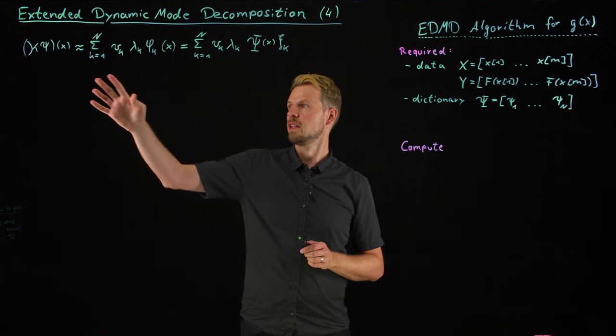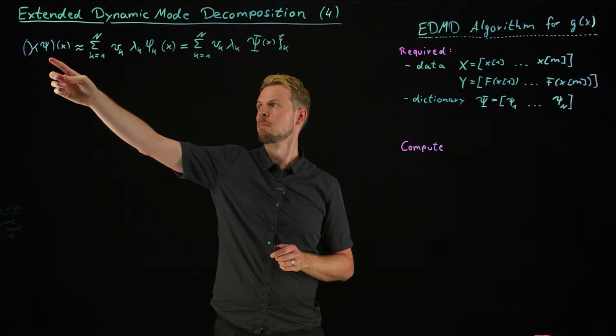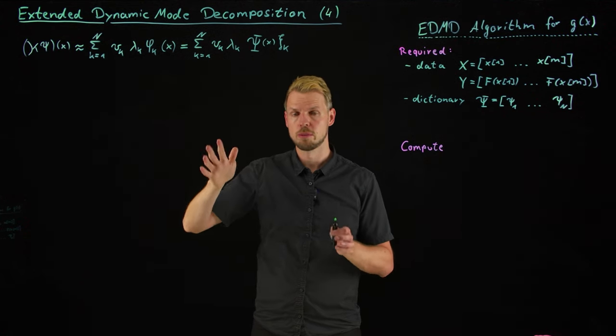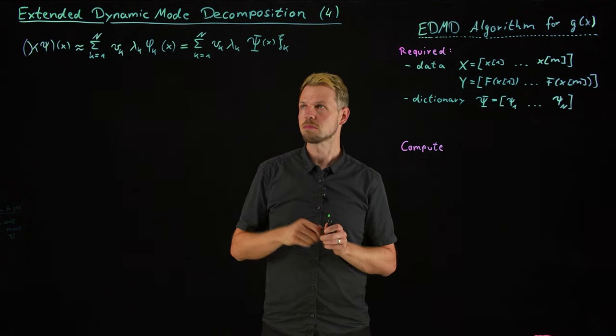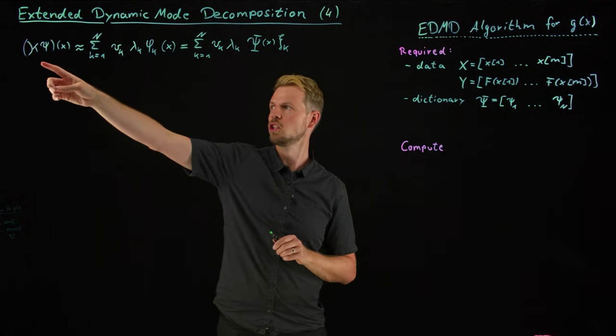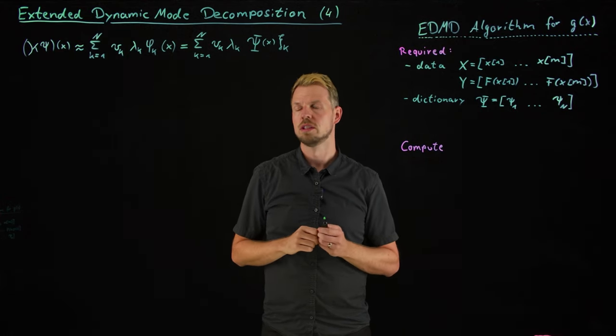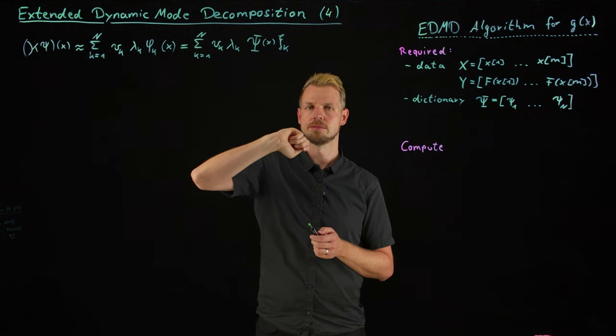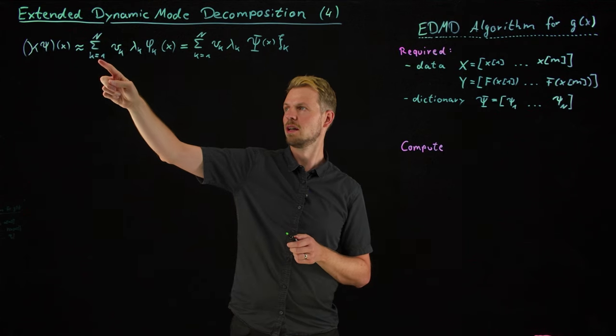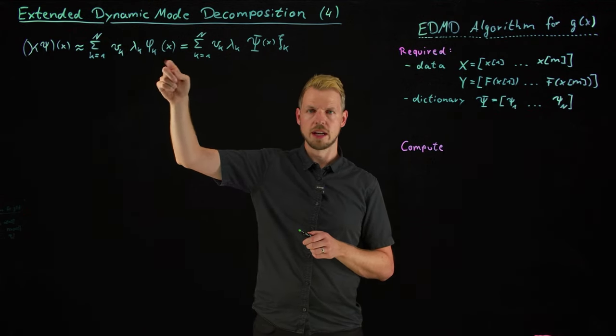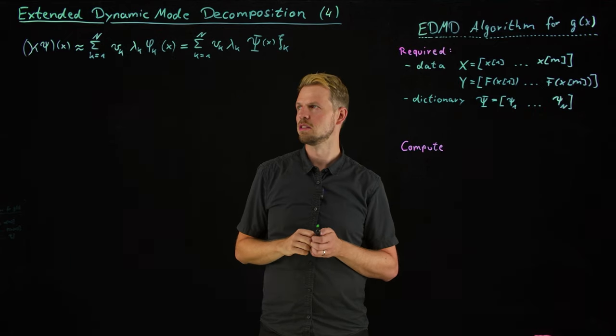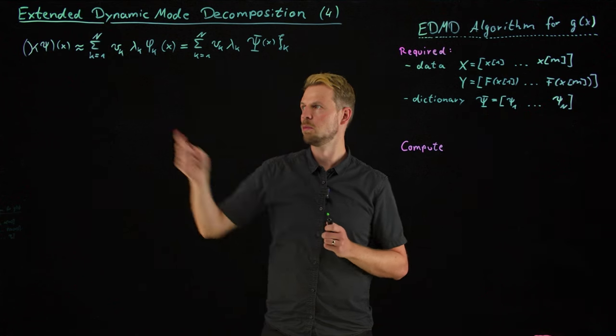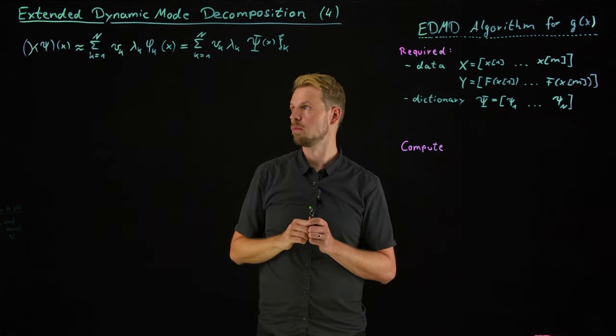What we have seen until now is that if we have this Koopman operator definition, it acts on a function as an infinite dimensional linear operator. Then if we define a dictionary psi that spans a subspace of this function space, we can compute a finite dimensional approximation of this operator which takes the form of a matrix. We have also seen that you can compute eigenvectors and eigenvalues of this matrix. The eigenvectors would be psi and the eigenvalues would be lambda.